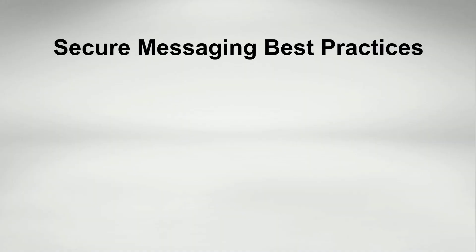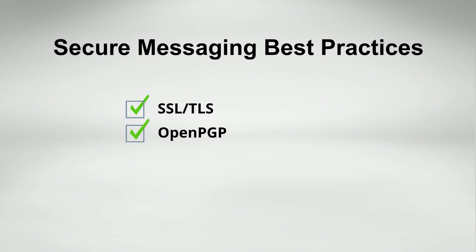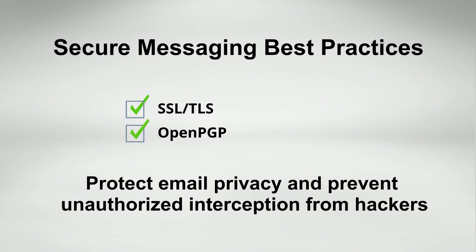When used together, encrypting the communication channel via SSL and TLS and encrypting the email itself using OpenPGP is the best way to protect email privacy and prevent unauthorized interception from hackers.